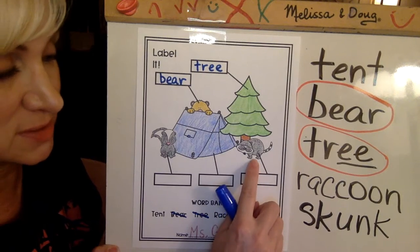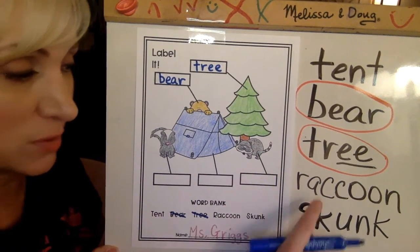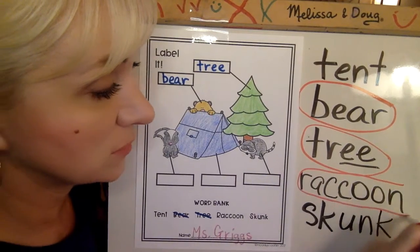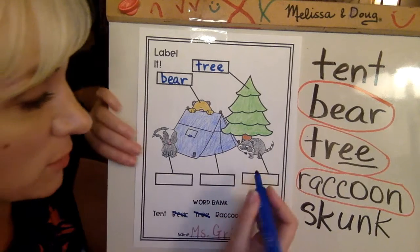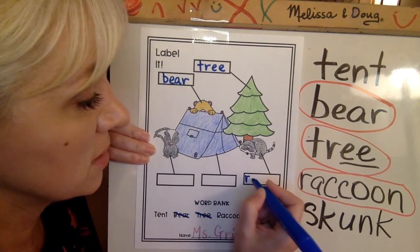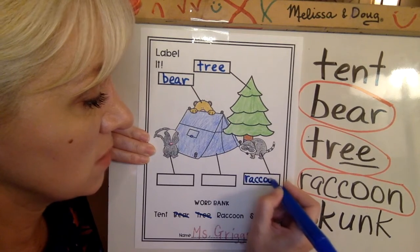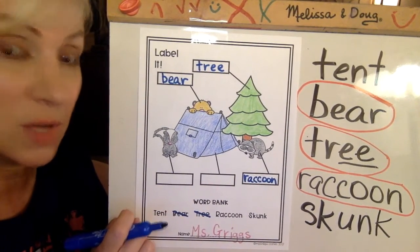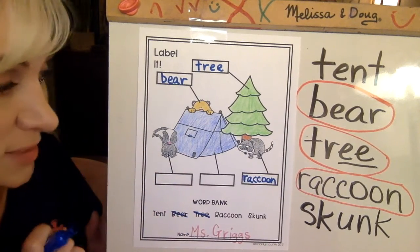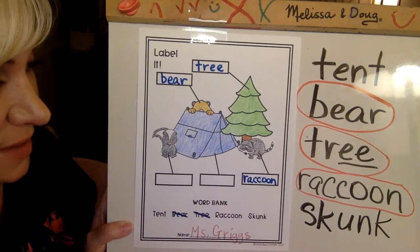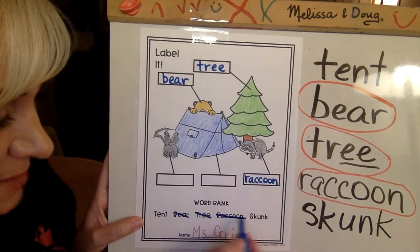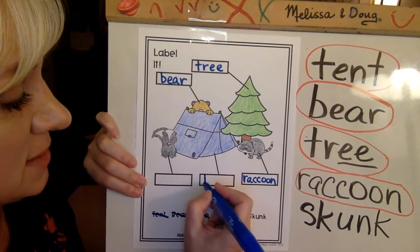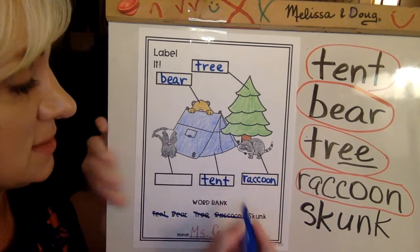Coming around, this is pointing to this animal right here with the mask and the ring tail — raccoon. I'm going to have to write really small to fit that in. R-A-C-C-O-O-N. I had to pay attention and squeeze my writing in — that's something you should be working on for first grade too: making your writing smaller and neater. This one pointing right here is a tent. T-E-N-T, tent.